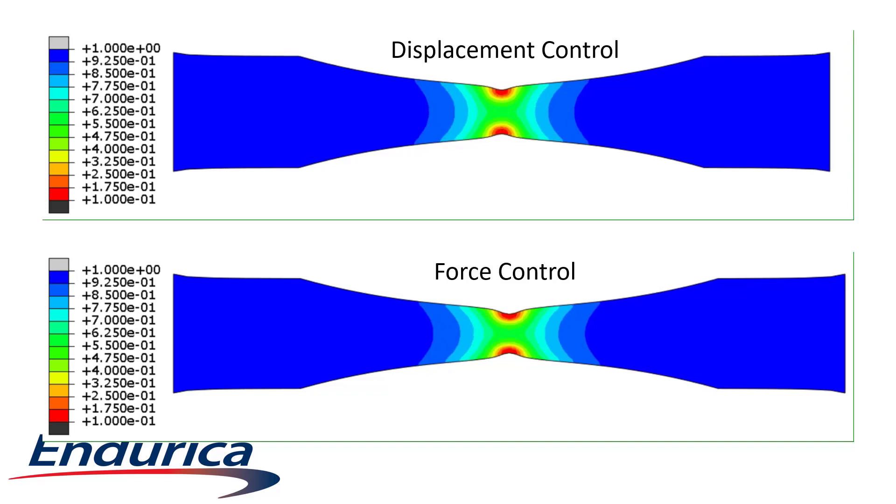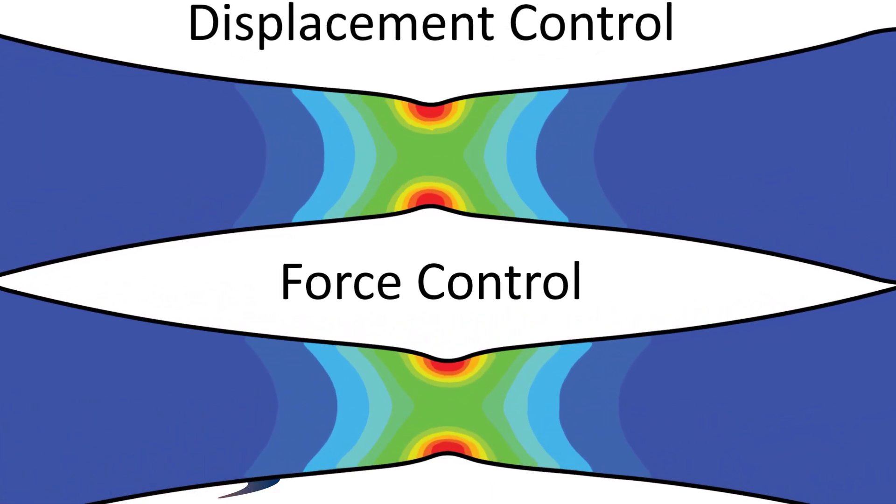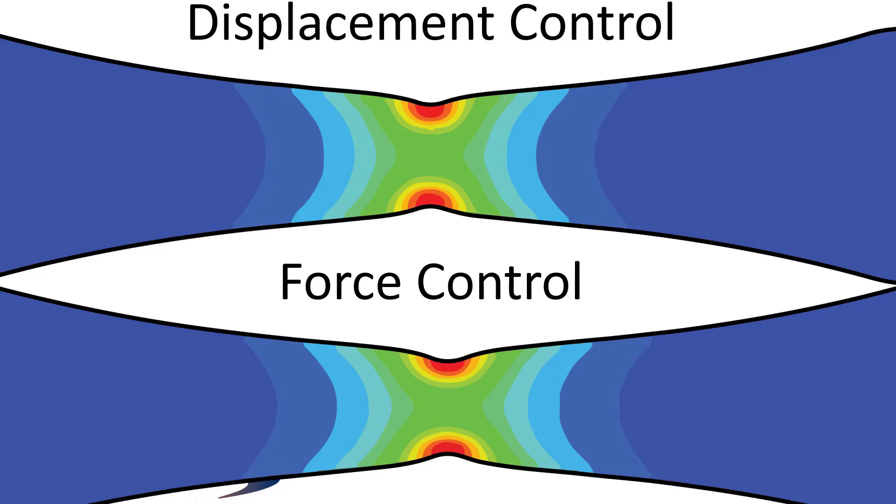Elements with less damage retain more of their original stiffness. Taking a closer look at the deformed geometry at the end of life for the two loadings, you can see that both loadings start to form a localized stress concentration in the region where the specimens will fail.